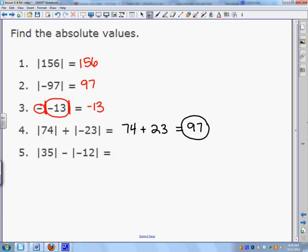This one is the absolute value of 35, which is 35, minus the absolute value of negative 12, which is 12. 35 minus 12 is 23.